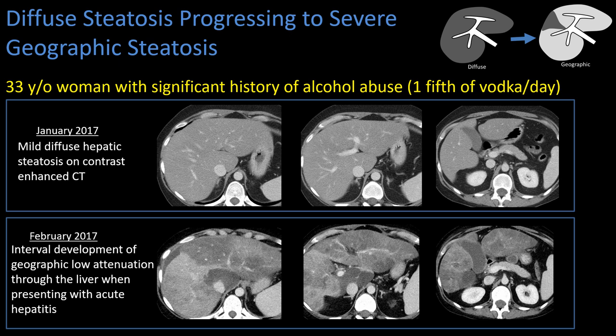In one month's time the patient presents with acute hepatitis due to heavy alcohol use. The diffuse steatosis has now progressed to a very heterogeneous form, where within the background of diffuse steatosis you now have geographic fat deposition and probably superimposed inflammation and fibrosis. That mild diffuse steatosis with continued alcohol use can progress very rapidly to a more severe form of steatosis and likely underlying fibrosis.